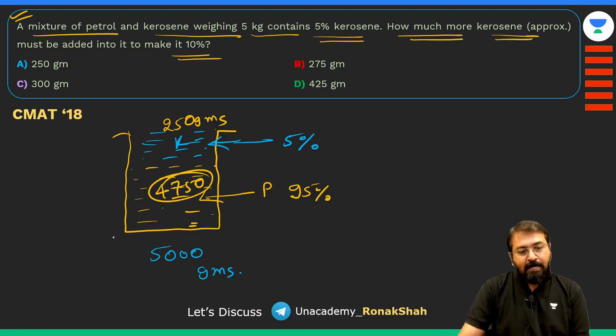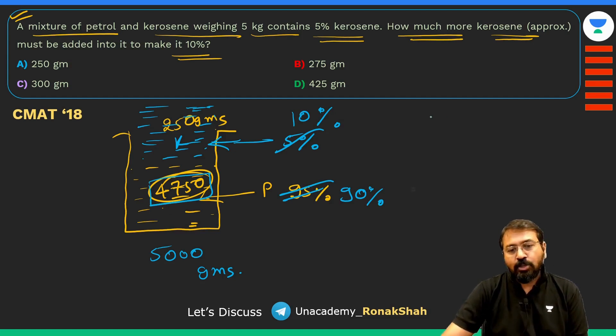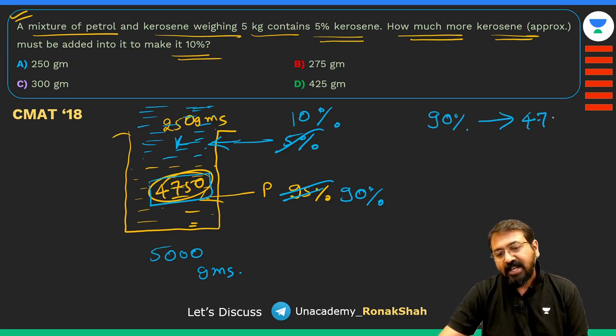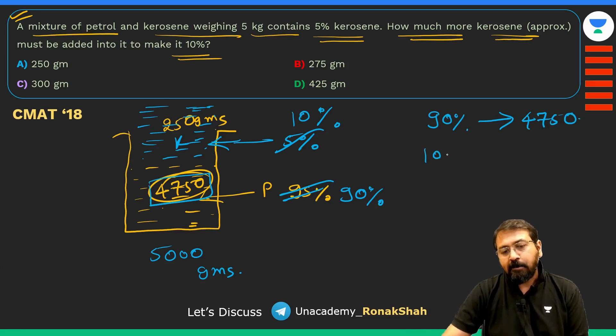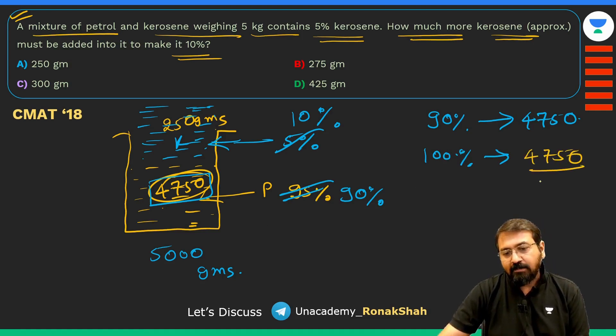So 250 grams is kerosene and remaining 4750 grams is petrol. Now what they are asking is how much more kerosene must be added to make it 10%. We are adding some kerosene over here, so instead of 5% it is becoming 10%. Definitely petrol portion will become 90%, but weight wise it will remain 4750.